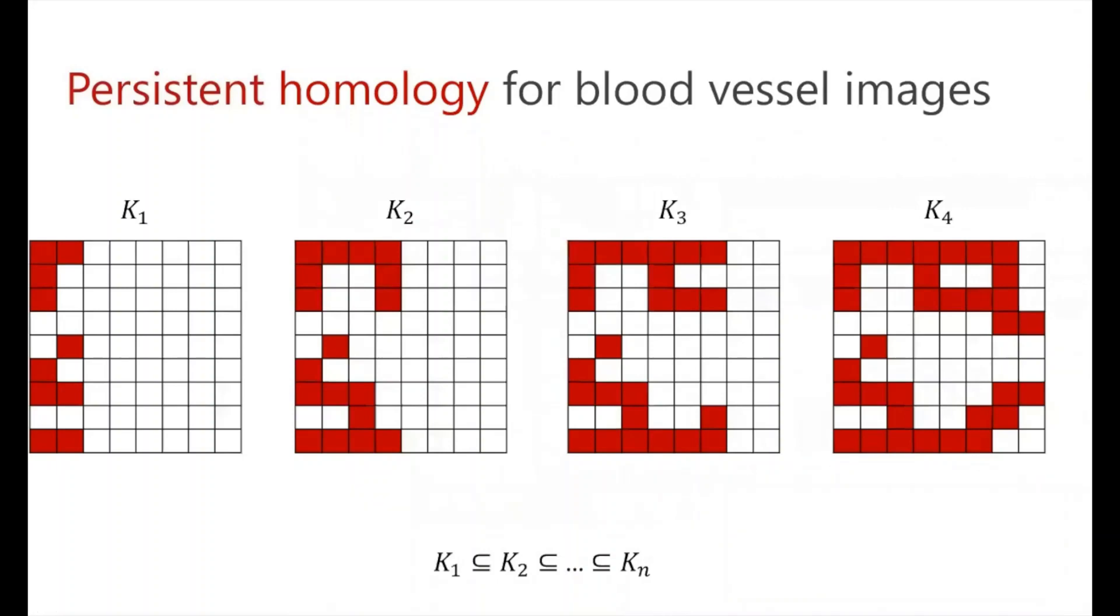Next we can talk about persistent homology for these blood vessel images, which is a collection of nested binary images given by k1, k2, k3, and k4 here. And we'll talk about how we create this filtration and compute the homology at each individual step.